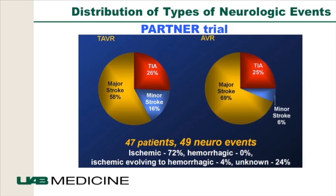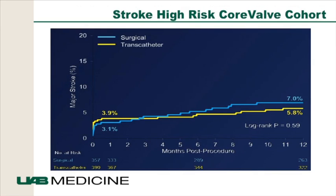Looking at the distribution of neurologic events in the PARTNER trial, the majority were ischemic strokes, very few hemorrhagic. Major stroke was actually more common in surgical aortic valve replacement compared to TAVR — patients after surgery may have a more dense or prolonged deficit. In the CoreValve cohort, the surgical arm had a higher risk of stroke compared to the transcatheter arm, which may partly be because the CoreValve uses an 18-French delivery system.